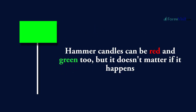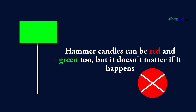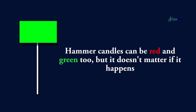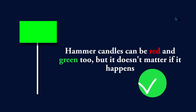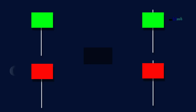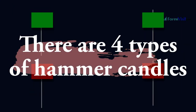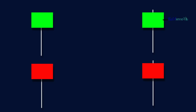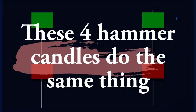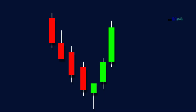Hammer candles can be red and green, but it doesn't matter — it is a bullish candle. It is considered better if it is green. There are four types of hammer candles, and these four types can be seen in this picture. All four hammer candles do the same thing.